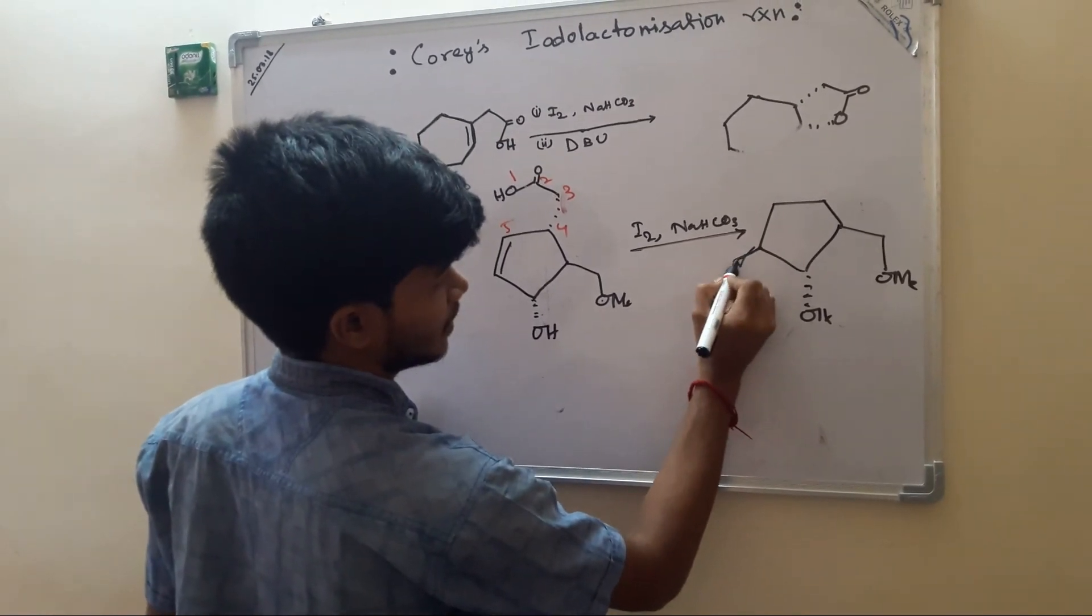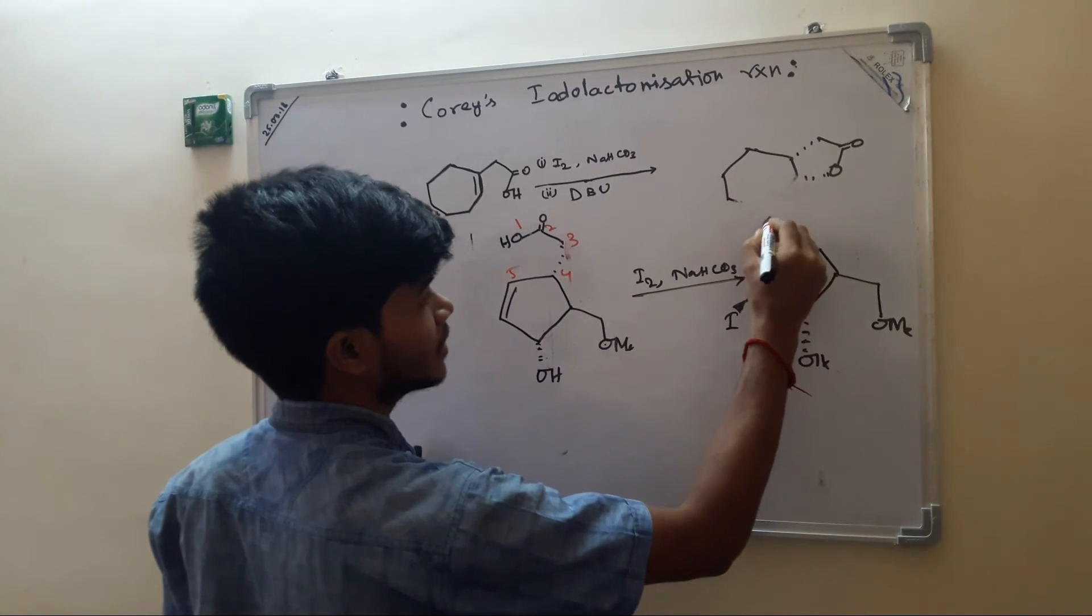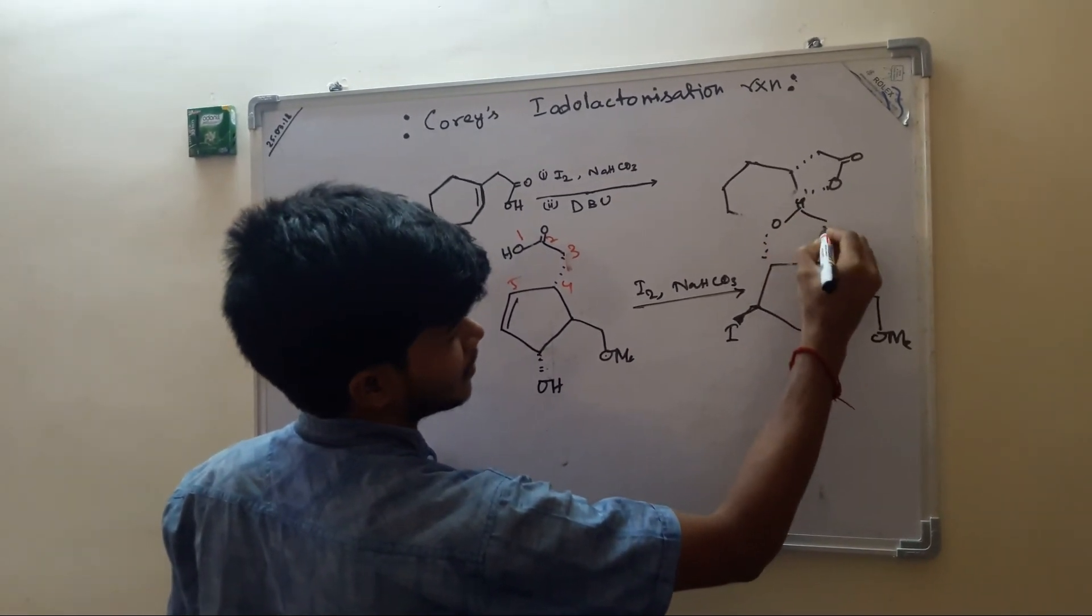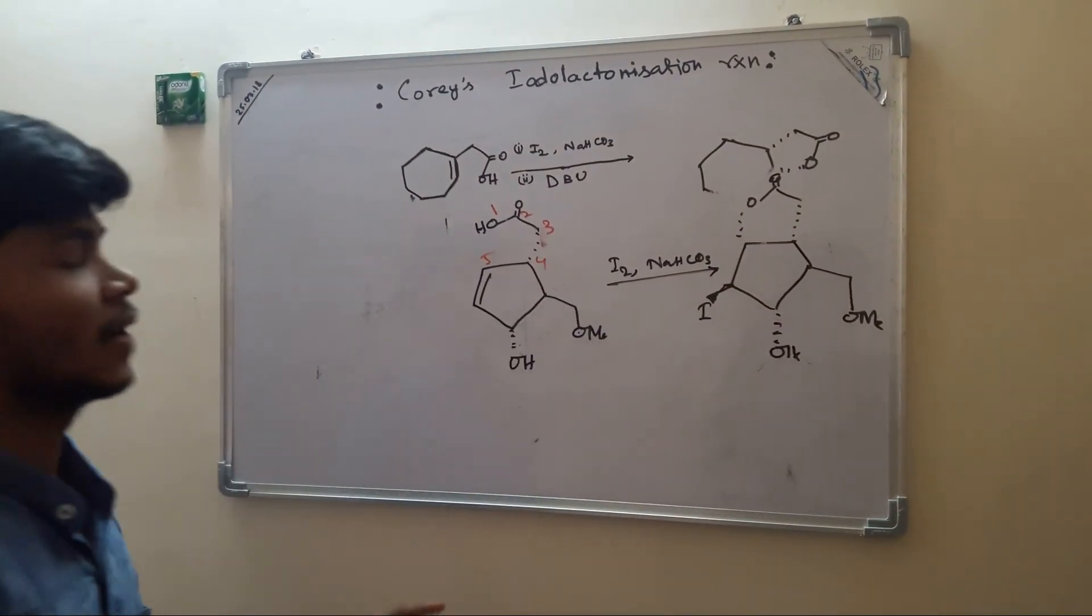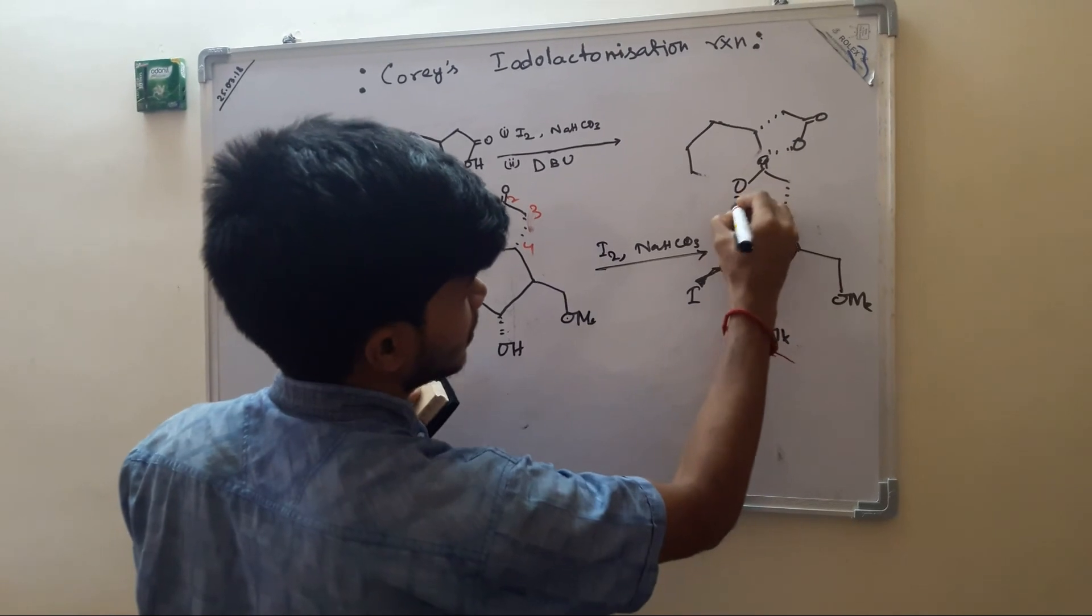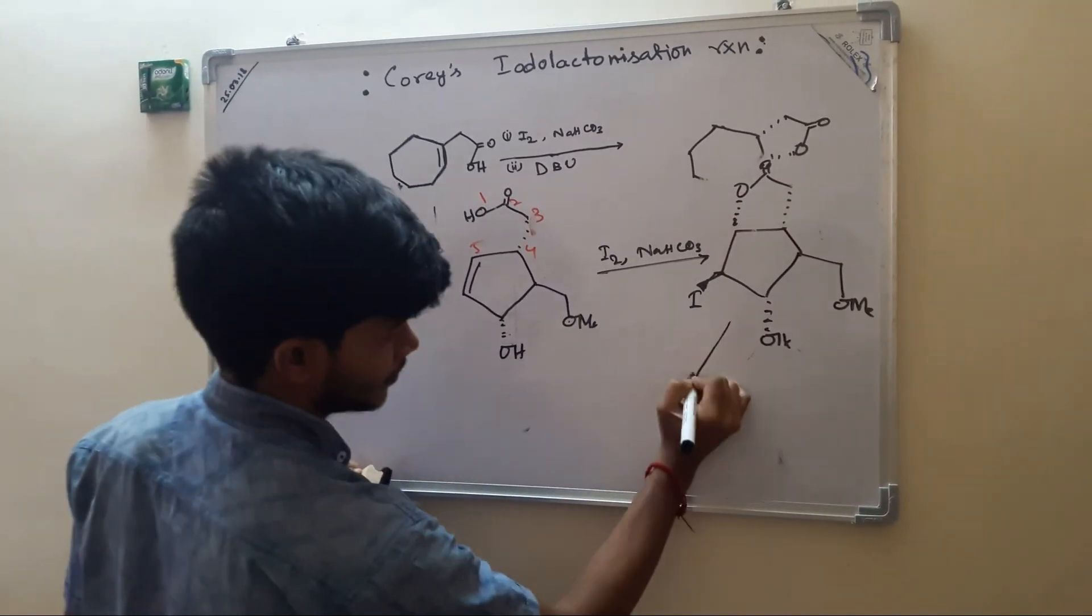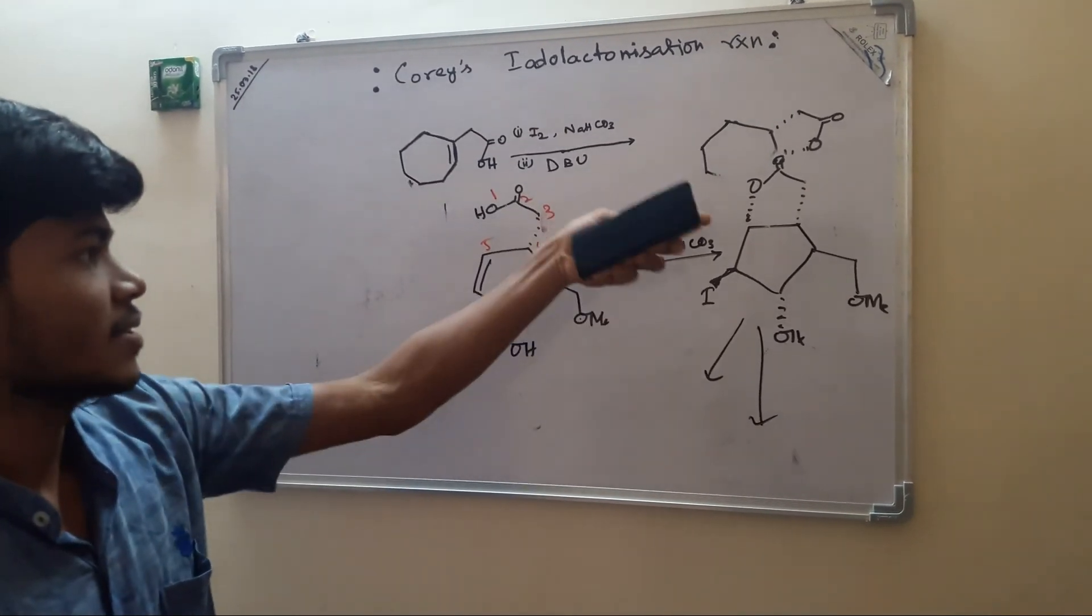The intermediate should be, if iodonium ion formed from the above. As we say that always there will be five-membered ring formation, it will be this. From here we can carry out several reactions as I have shown.